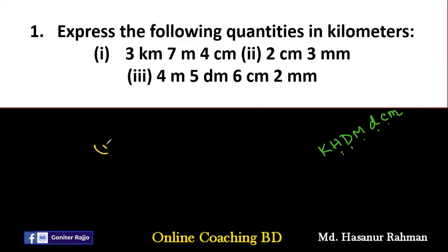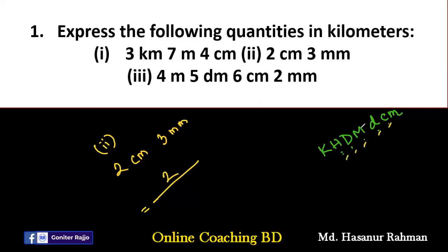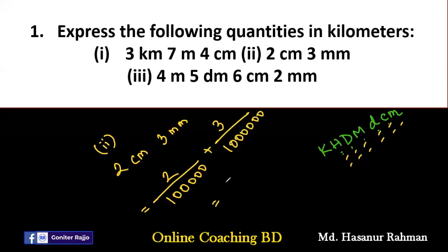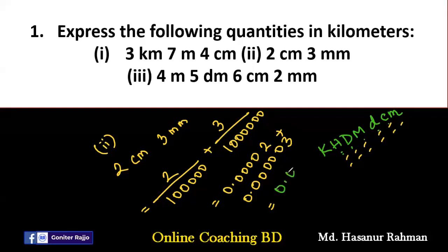Number two: two centimeters, three millimeters. To convert centimeters to kilometers, we count five letters, so we divide two by five zeros — one hundred thousand. To convert millimeters to kilometers, we count six letters, so we divide three by six zeros — one million. The result is 0.00002 plus 0.000003, giving a final answer of 0.000023 kilometers.